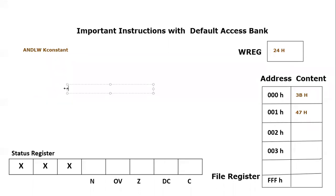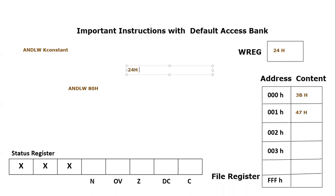Let's write the instruction. We write ANDLW and we want to provide a literal value — let's say 0x80. What is going to happen is there will be an AND operation between the working register value and this literal value 0x80. The working register value is 0x24.